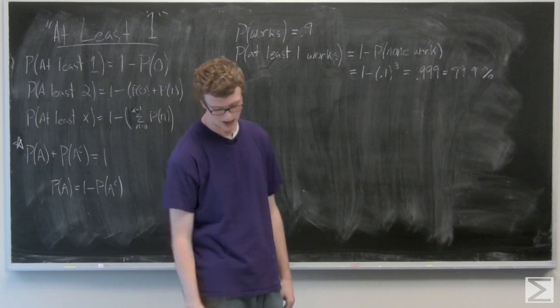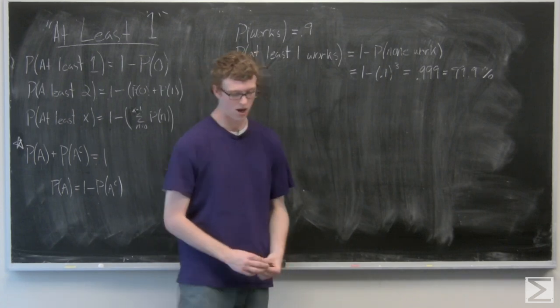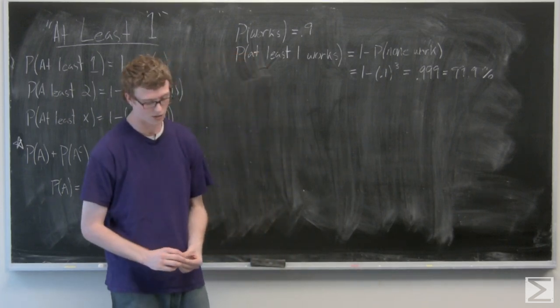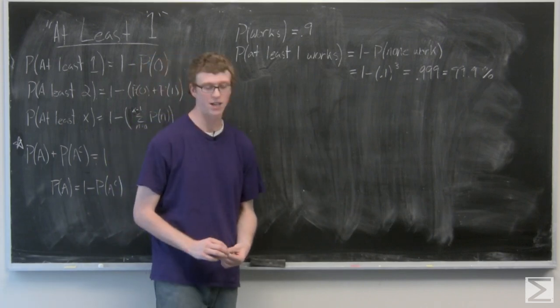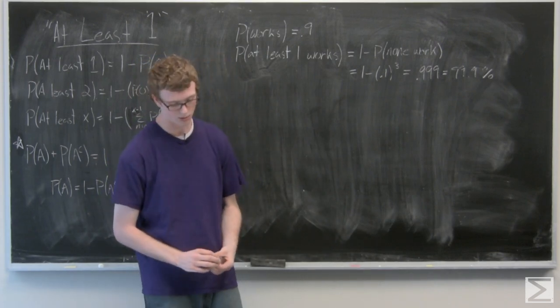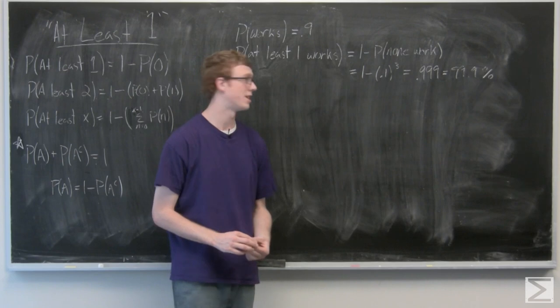Now we're going to take a look again at some dice rolls. We're going to take a look at five dice rolls and the question asks, in five dice rolls, what is the probability that we get at least one six?